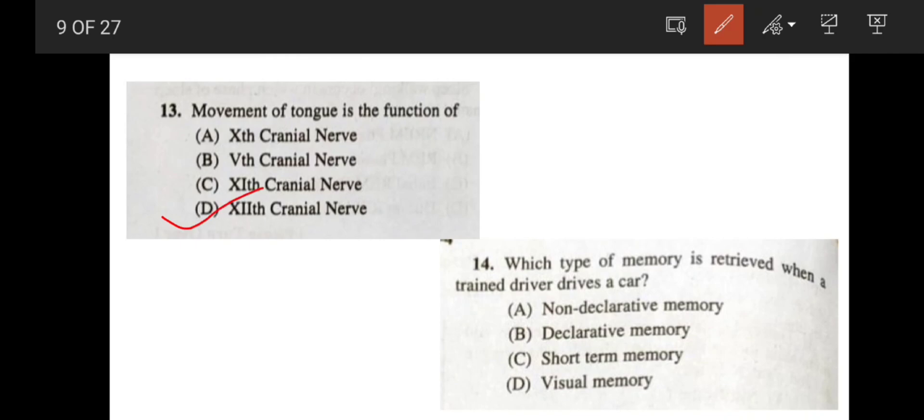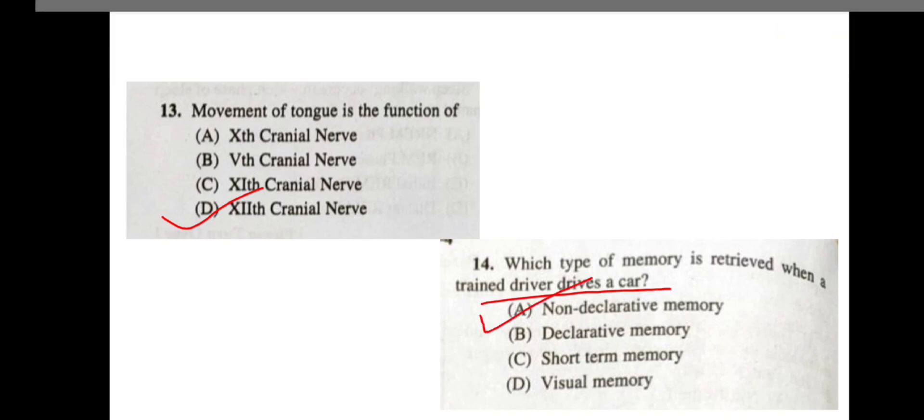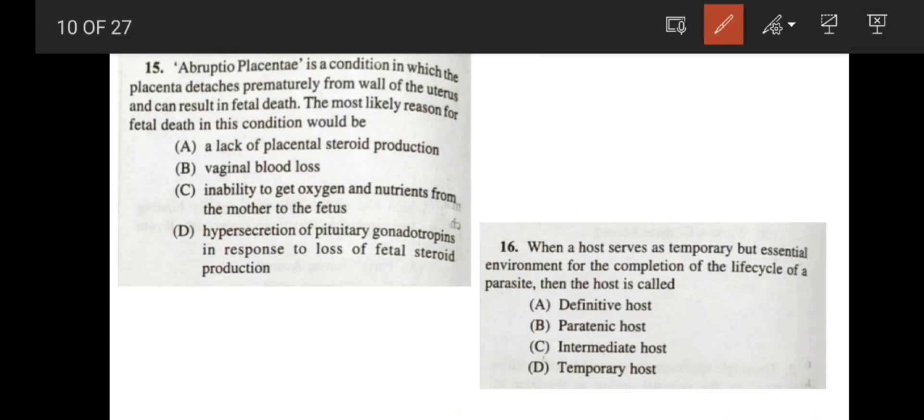Now, coming to the question number 14. Which type of memory is retrieved when a train driver drives a car? Whenever a train driver drives a car, that is a kind of procedural memory. And procedural memory comes under non-declarative memory. So correct answer is option A. Coming to the next question. Abruptio placenta is a condition in which placenta detaches prematurely from wall of the uterus and can result in fetal death. The most likely reason for fetal death in this condition would be, see, as the placenta is now detached from the uterus, so the fetus is not getting its oxygen and nutrients from mother. So it becomes difficult for it to survive and fetal death may occur. So correct answer would be option C, inability to get oxygen and nutrients from the mother to the fetus.